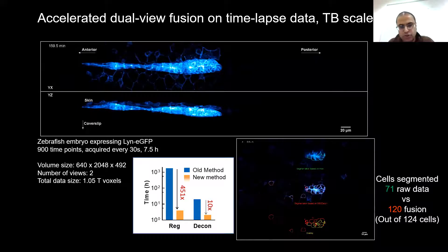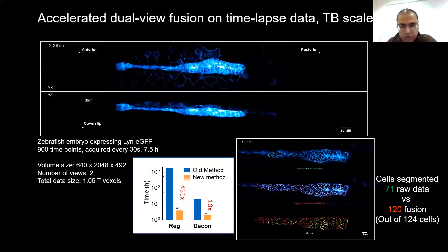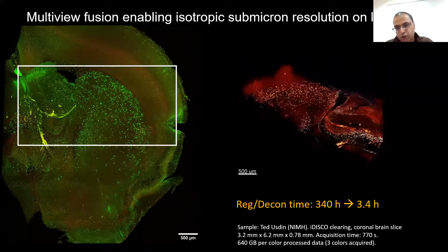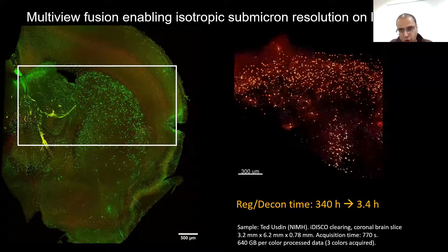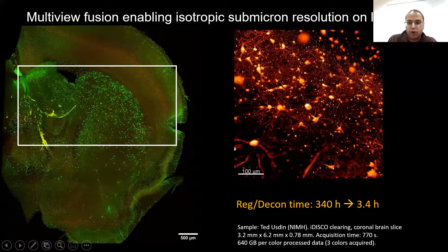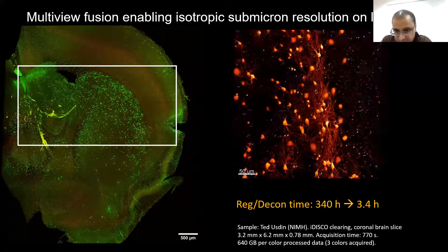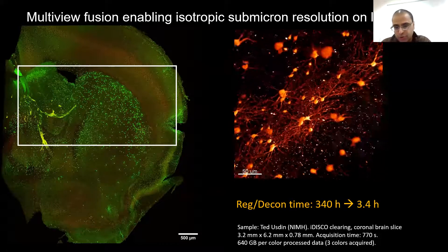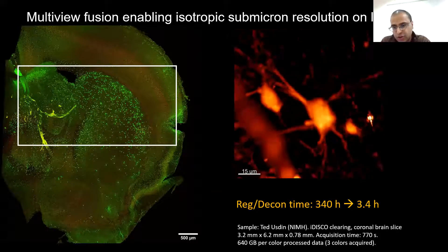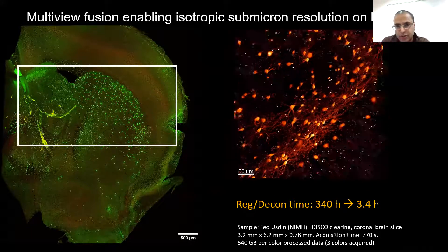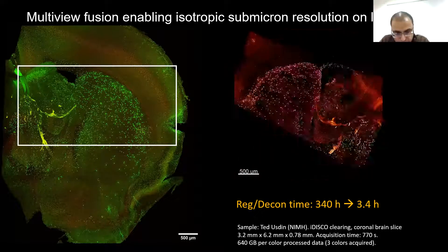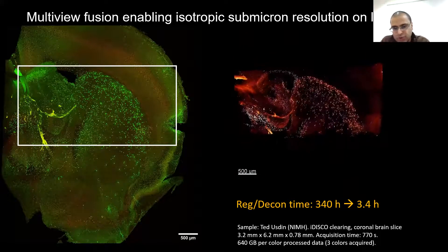Another application where faster processing is useful: using clear tissue lenses with Clarity, iDISCO, or other clearing methods you can interrogate much larger volumes of tissue. For this coronal brain slice using our clear tissue Diaspim, we could record the data set in just a few minutes, but it would have taken hundreds of hours to register and deconvolve it at sub-micron resolution. Now we can drive this down to a few hours on a consumer-grade GPU, and with more or better GPUs you can speed this up further.